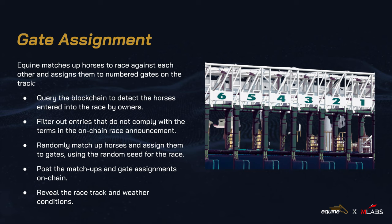After registration, equine matches up horses to race each other and assigns them to numbered gates on the racetrack. We run a blockchain query to detect the registered horses, filter out any entries that don't comply with the rules of the race, and use the random seed to randomly match up horses and assign them to gates. The matchups and gate assignments are then posted on-chain, alongside the race track and weather conditions.